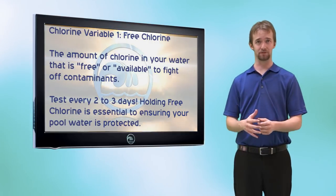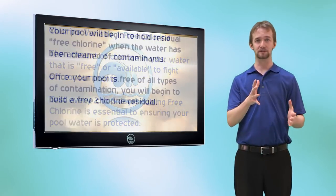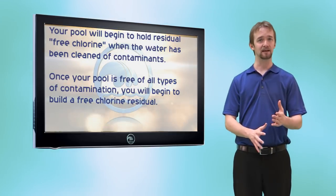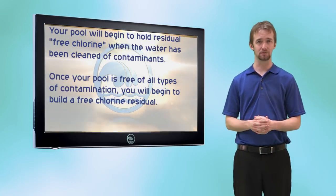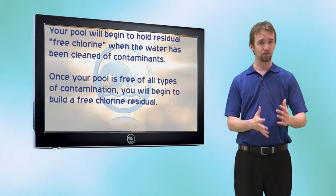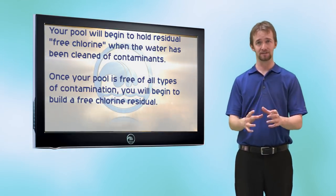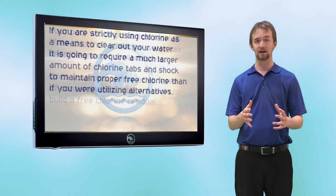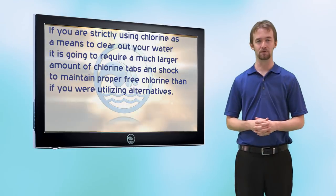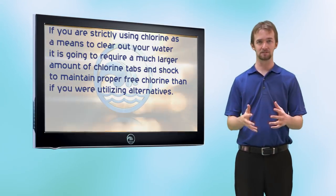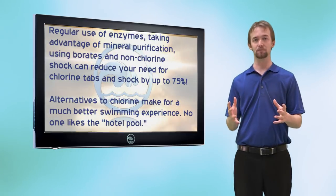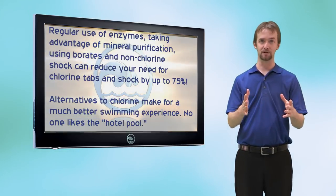To get free chlorine, your pool needs to be completely free of contaminants — bacteria and algae need to be suppressed and under control. If you're only using chlorine shock and chlorine tabs, you'll have to use a whole lot more. But if you're using enzymes, algaecides at maintenance dosage, and Supreme Plus, you'll be able to use less chlorine to hold the amount you need.